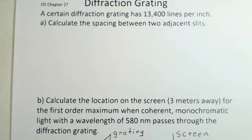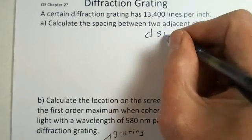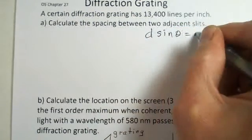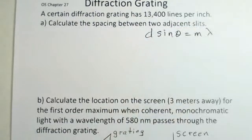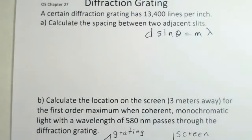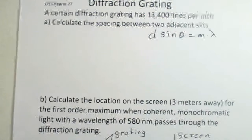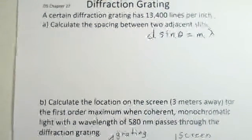So in this problem we have a diffraction grating of 13,400 lines per inch and we are going to need to do d sine theta equals m lambda work with this equation to describe where the maxima are located. So we're going to need information on the d, 13,400 lines per inch. Let's see how we find the d value for this.